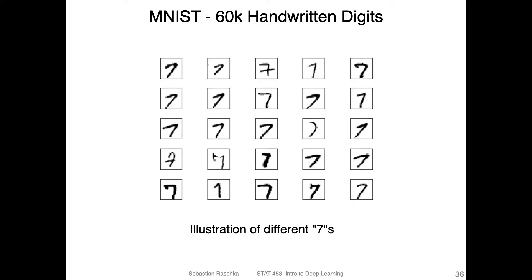Here's an example of how diverse these handwritings are. These are all illustrations of the number seven — different people writing a seven — and you can see it varies a lot. Personally, where I grew up in Germany, we usually write a seven with a cross line. In the US, it's more common to write it differently. But you can see there are also very interesting flavors, for example one that looks almost like a C.